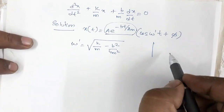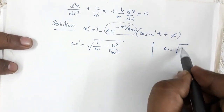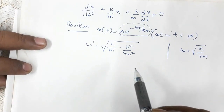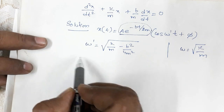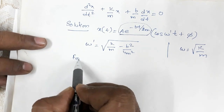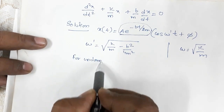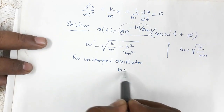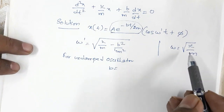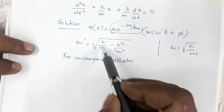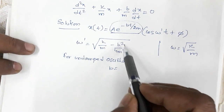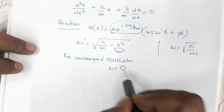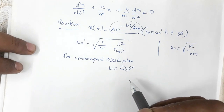Earlier, for undamped oscillation, we had ω = √(k/m). So the term b²/4m² is the extra reduction in frequency due to damping. For an undamped oscillator, b = 0, and the formula reduces back to ω = √(k/m), recovering the undamped result.